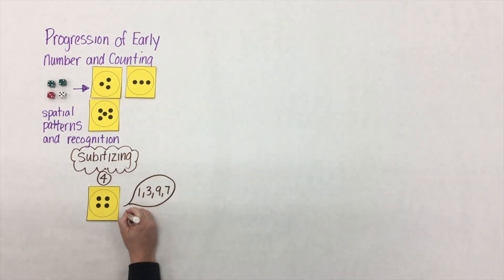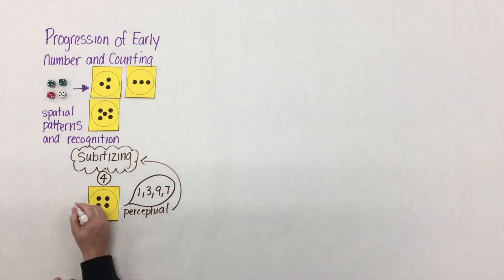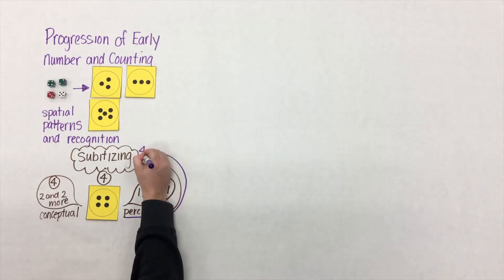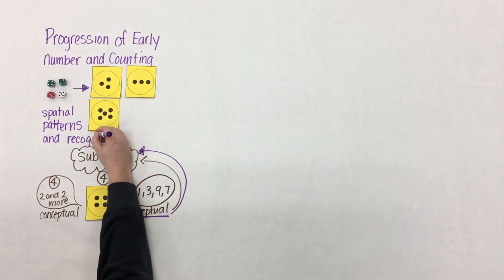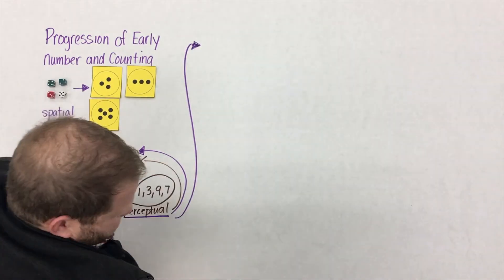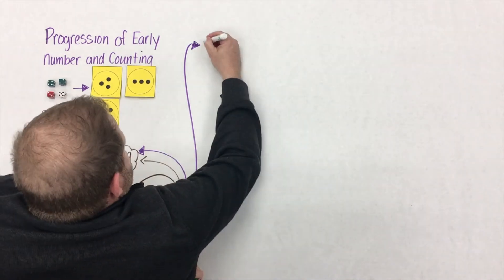But here, if we were to show the number 4, a student might say 4. Yes, they know the number name, but if you ask them to prove it, they might count them 1, 3, 9, 7. This is a perceptual subitizer. They cannot explain why it's 4. I think most of us are familiar with the conceptual subitizer that would say 4 because there's 2 and 2 more. In this early trajectory, we're talking about a perceptual subitizer.